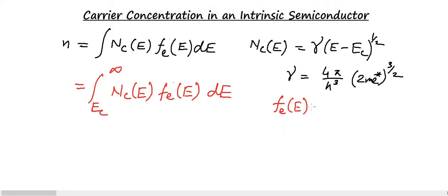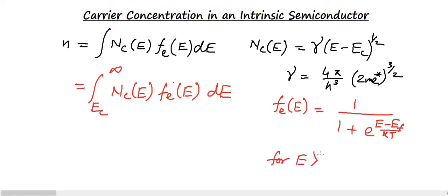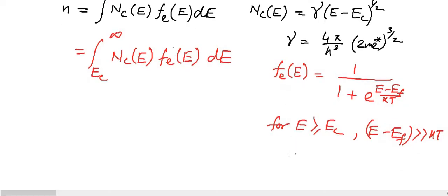We know that the Fermi-Dirac function F(E) equals 1 divided by [1 plus e^((E minus E_F) / kT)]. From this, if E minus E_F is much greater than kT, then the exponential term in the denominator will be very large, so we can neglect the plus one term.